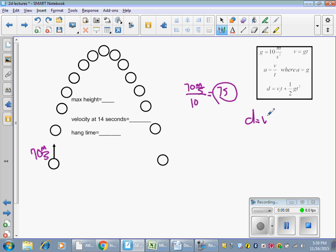My velocity initial times time plus one-half g t squared. Let's plug it in: 70 here, my time is seven seconds, plus one-half - it's negative 10, I forgot that. Remember why is it negative 10? It's negative 10 because acceleration is the opposite. This is positive, that means this would have to be negative 10. And then my time is 7 squared.